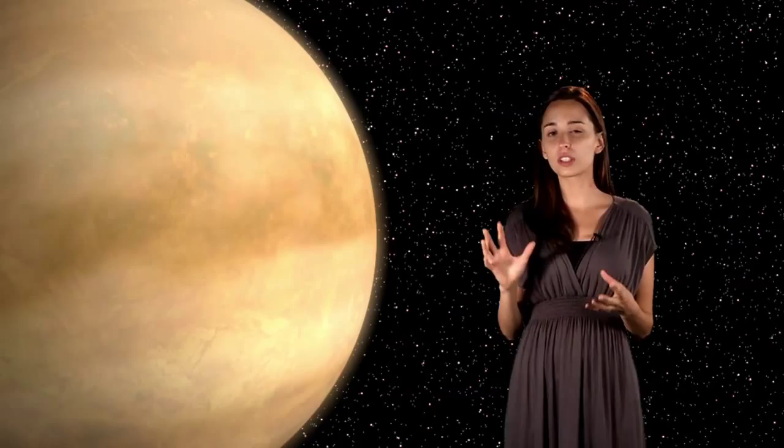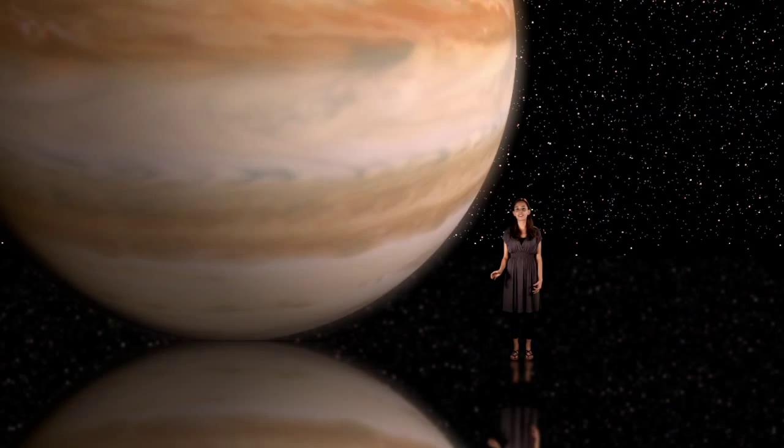Jupiter and Saturn fall in the darkest region of the plot. Their atmospheres have methane and ammonia in it which absorb red light and other gases that absorb blue light.